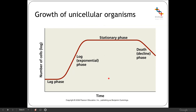Once microorganisms are in the fermenter, their growth follows a very similar pattern shown on a graph plotting number of cells against time on a log scale. Looking at the different phases, first we have the lag phase where there is little or no increase in cell number. The cells have just entered the conditions, they are adapting, and may need to be induced or stimulated to start metabolising the substrates they've been given.